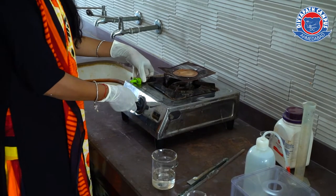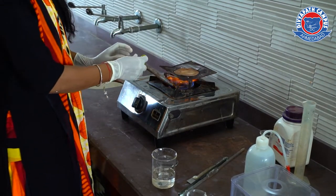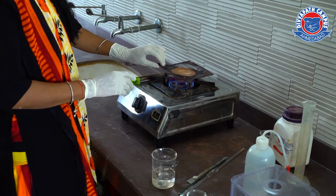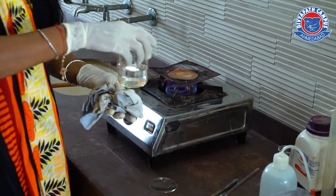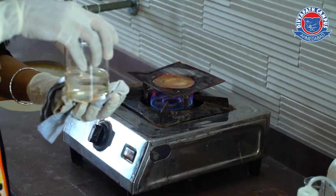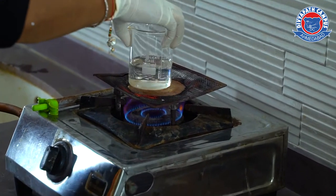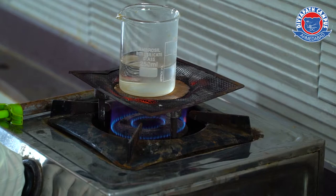For the boiling, we need a Bunsen burner or gas, tripod stand, and wire gauze. Make sure your outer surface should not be wet. It must be dry and then you have to put it on the gas.